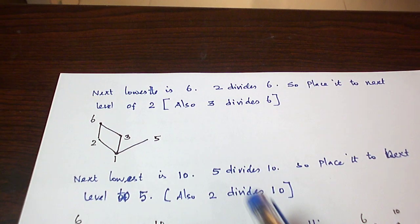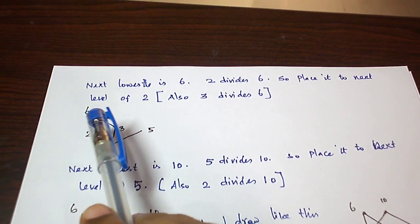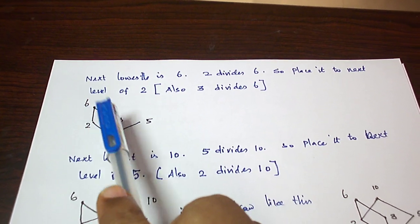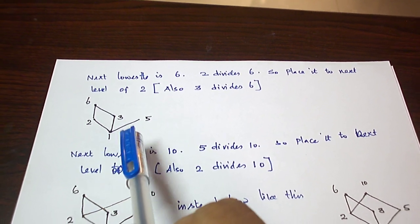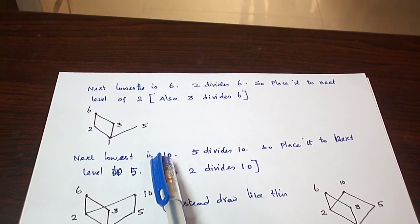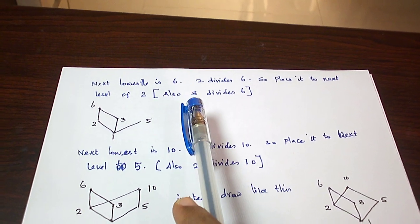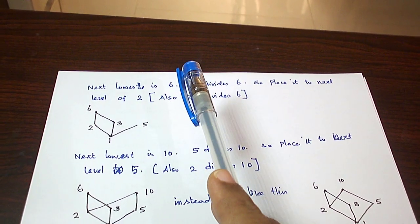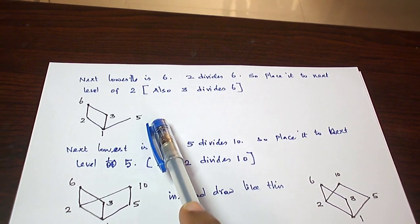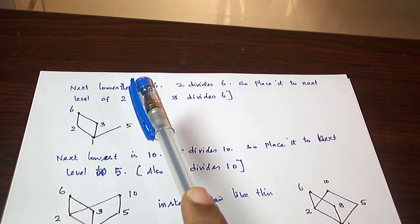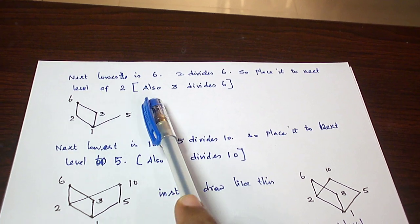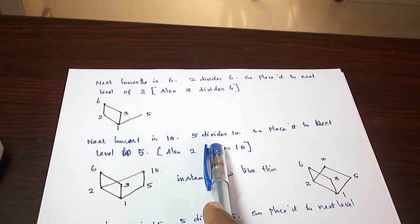2 divides 6 as well as 3 also divides 6, so place 6 above the level of 2 and 3, draw a line between 2 and 6 as well as 3 and 6. This is how we are placing the element 6. Next least element is 10. 6 does not divide 10, so it cannot be brought above the level of 6, and 5 divides 10.